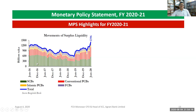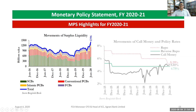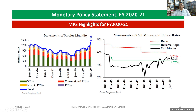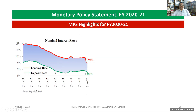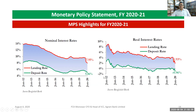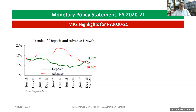Regarding the movement of surplus liquidity: the CBS is shown in one color, Islamic PCBs in another color, and conventional PCBs in yellow, with the total line reaching 1,396 billion taka in June 2020. For the movement of call money and policy rates in June 2020: repo rate is 5.25%, reverse repo is 4.75%, call money rate is 5.01%. The nominal lending rate in June 2020 is 7.95%, deposit rate is 5.06%. The real lending rate is 1.93% and the deposit rate is minus 0.96%.